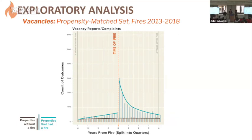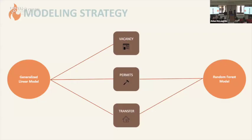For vacancies: interestingly, properties that were going to have a fire showed an increase in vacancy reports even leading up to that fire — matching research that vacancies are often a fire risk. After the fire, there was a sharp rise in vacancy reports continuing for four years. Knowing that fires are associated with a sustained likelihood of these outcomes, we thought that giving the fire department a property-level prediction at any given time would be most helpful.